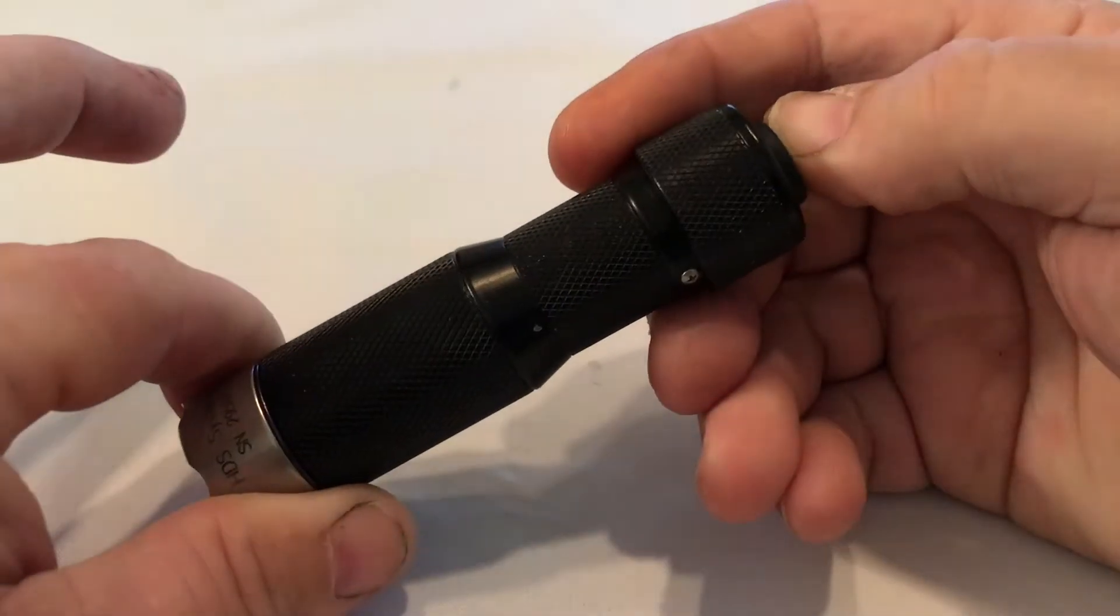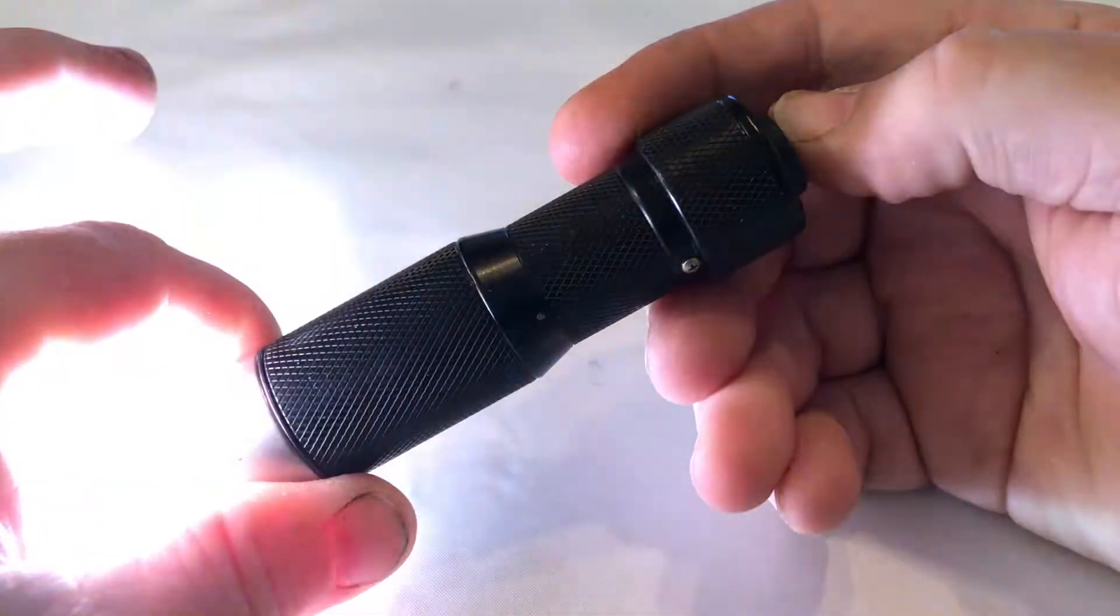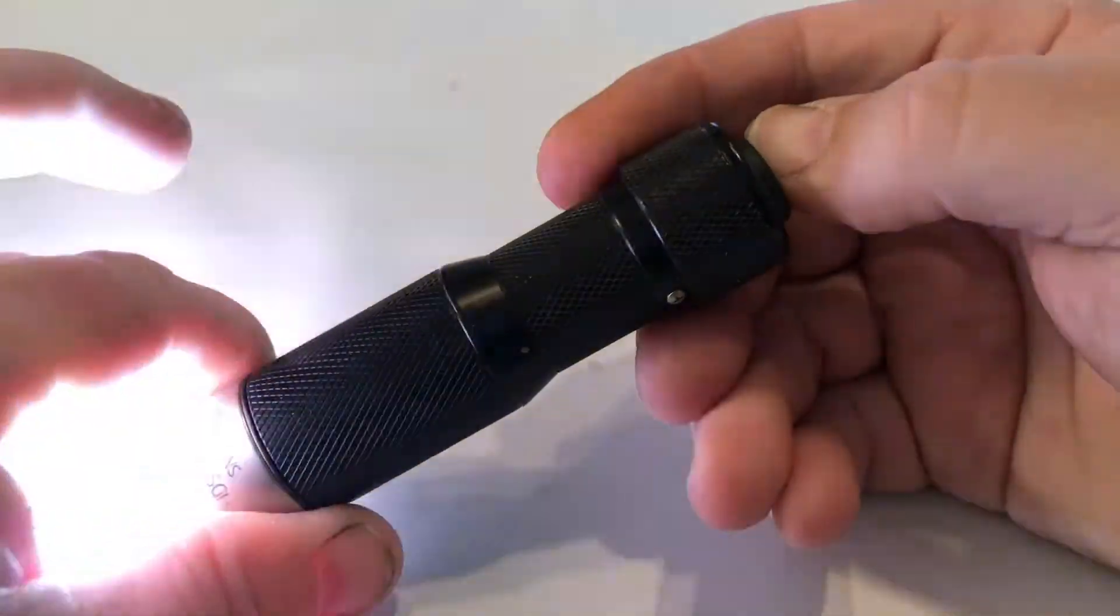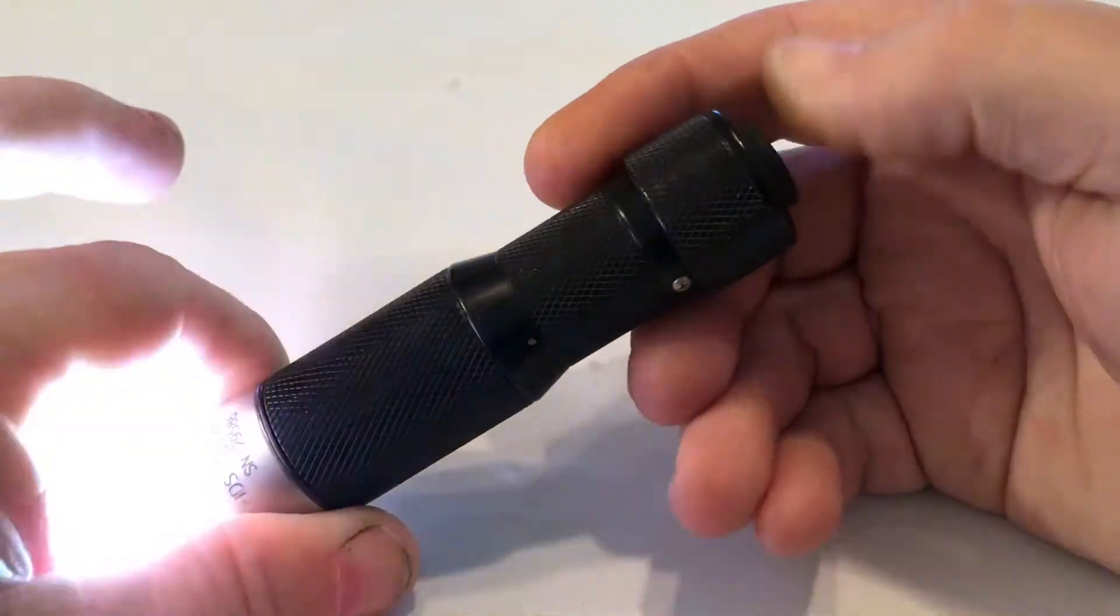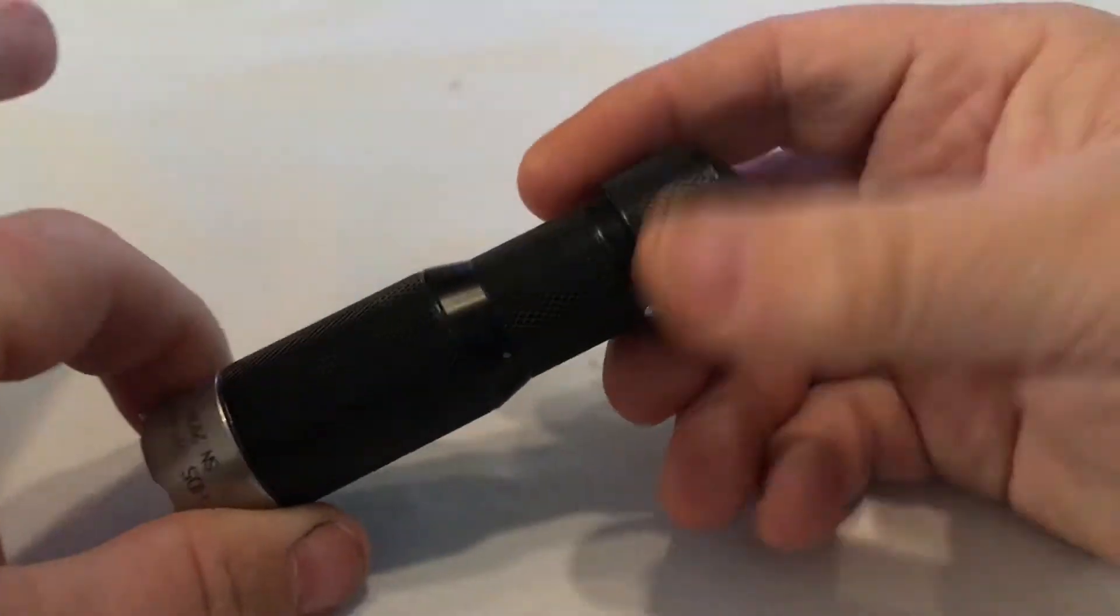There's the fast strobe, slower strobe, pulsating strobe. Let's say that we want to do pulsating strobe. I'll push hold. Ramps up. Turn it off.